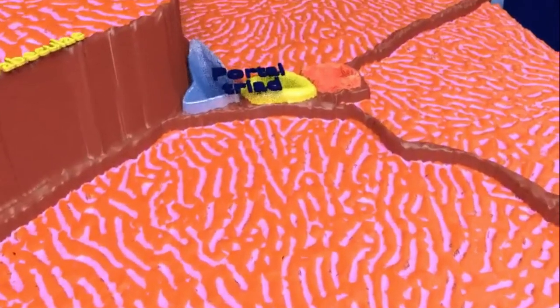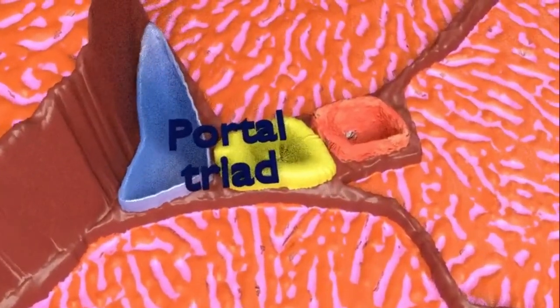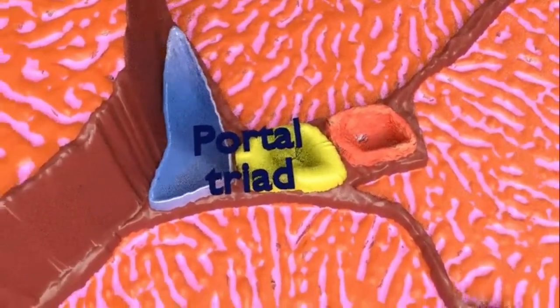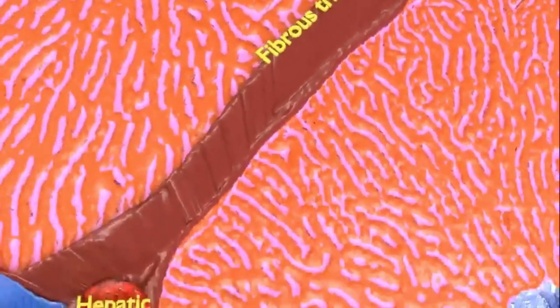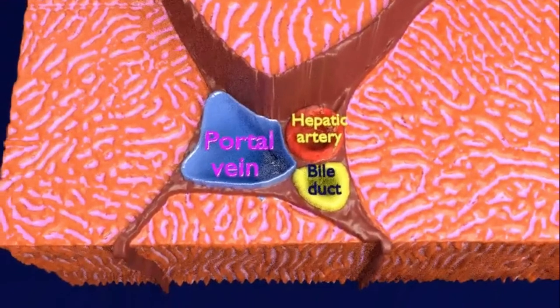Each anatomical lobule is bound by six portal triads as you see here. The structures forming the portal triad are shown and labeled in detail.